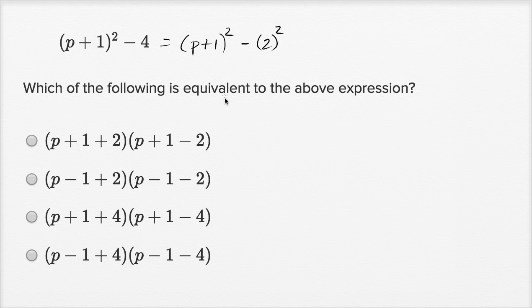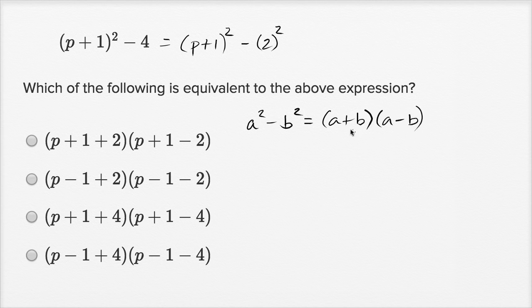You might remember from your algebra: if I have a squared minus b squared, this can be factored as a plus b times a minus b. So we could do the same thing over here. We're not used to treating an expression like p plus one as our a, but there's no reason why we can't.